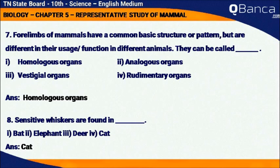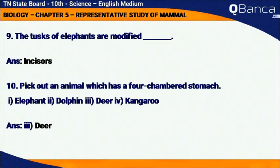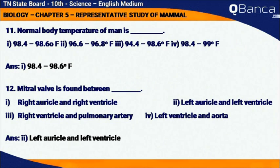Forelimbs of mammals have a common basic structure or pattern but are different in their usage and function in different animals — they can be called homologous organs. Sensitive whiskers are found in cats. The tusks of elephants are modified incisors. Pick out an animal which has a four-chambered stomach: Deer.